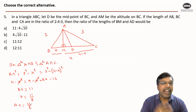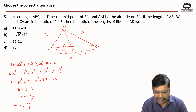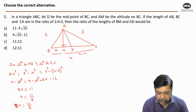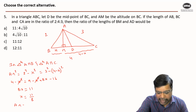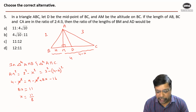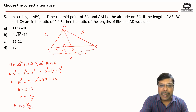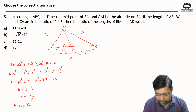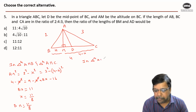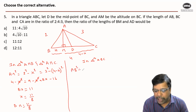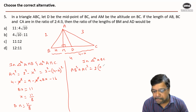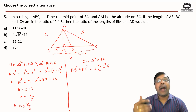Now I need to find the length of AD. AD is the median, and we know the property for the length of a median — popularly called Apollonius' theorem. It states that in triangle ABC, the sum of squares of two adjacent sides AB² + AC² equals 2 times the square of the median plus 2 times the square of half the opposite side: AB² + AC² = 2(AD²) + 2(DC²).